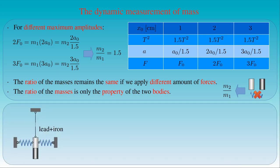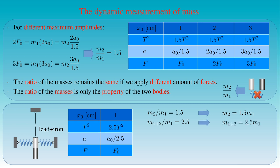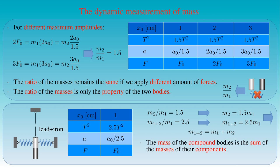Now we can attach the iron cylinder to the lead cylinder, and measure the period of the simple harmonic motion performed by the compound. For the maximum amplitude of 1 cm, the force applied on the double cylinder is still equal to F0. We find that T² of the compound is 2.5 times greater than that of the single iron cylinder — so the mass ratio of the double cylinder to the single iron cylinder is 2.5. This shows that the compound is 2.5 times more massive than the iron cylinder alone. We conclude that the mass of the compound of cylinders is the sum of the masses of the individual cylinders — that is, mass is an additive or scalar quantity.